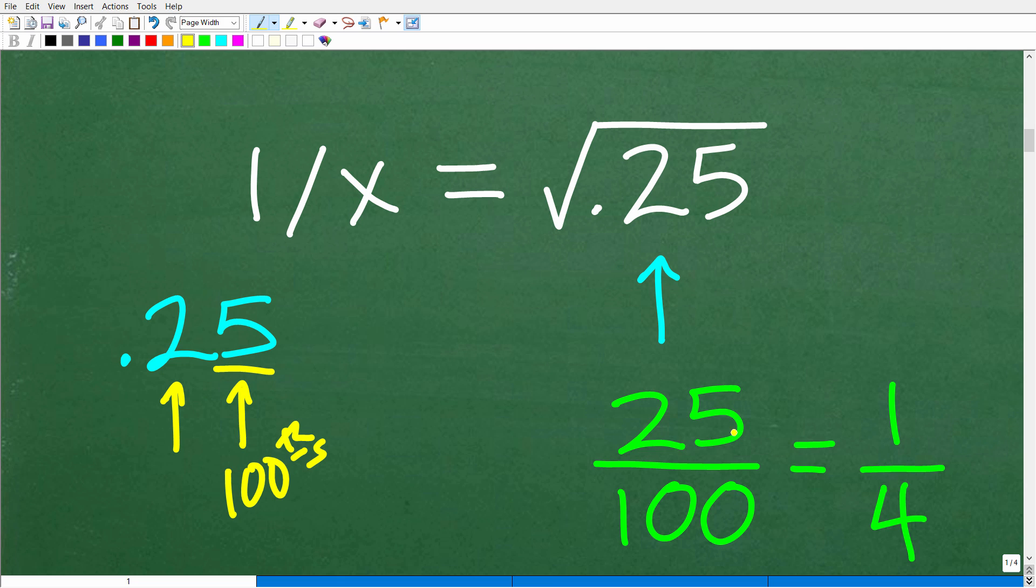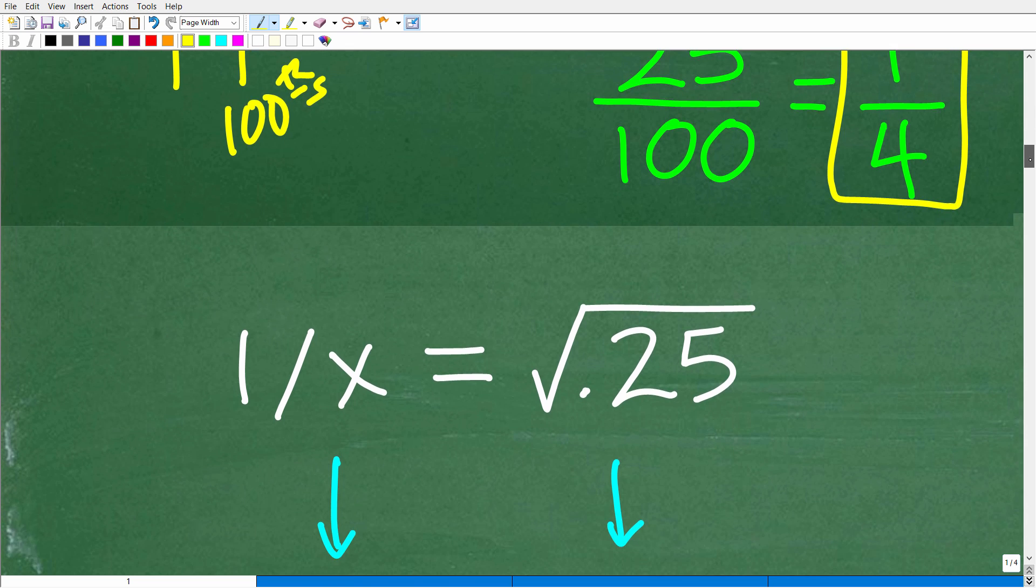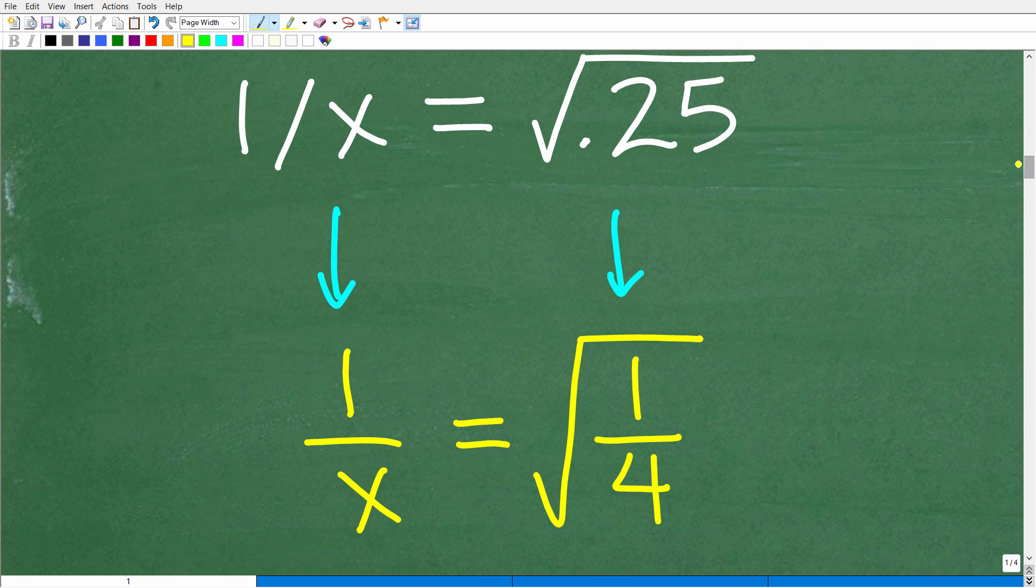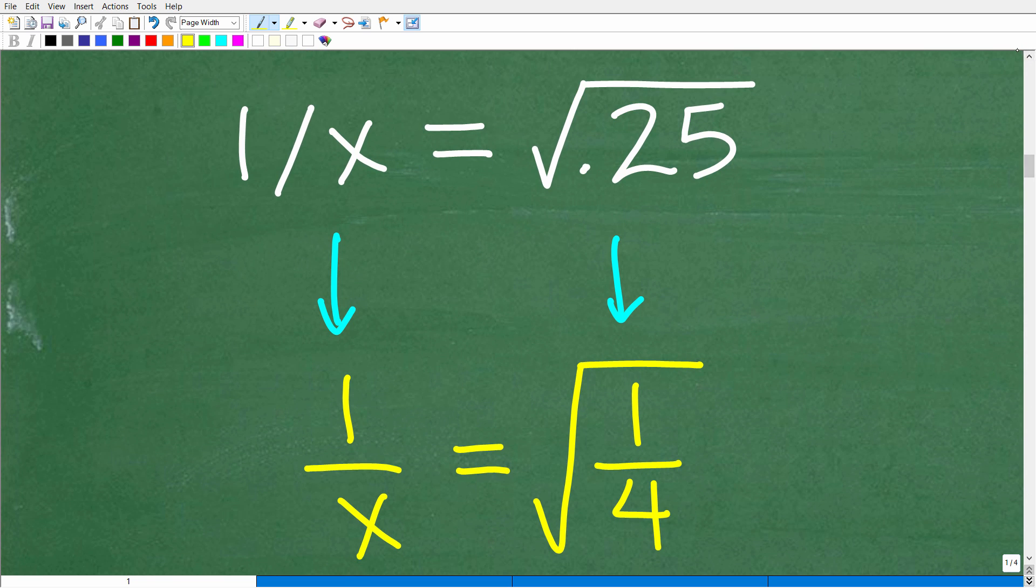Okay. Now, of course, I can reduce this fraction down 25 over 100 to the fraction one-fourth. So instead of the square root of 0.25, we're going to have the square root of 1 over 4. Okay, so now let's go ahead and see what we need to do. And what we need to do is just go ahead and rewrite this problem by taking this decimal and expressing it as a fraction.